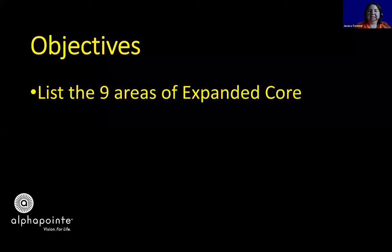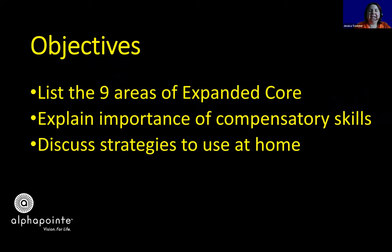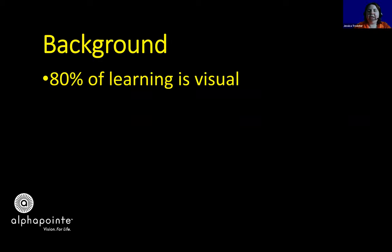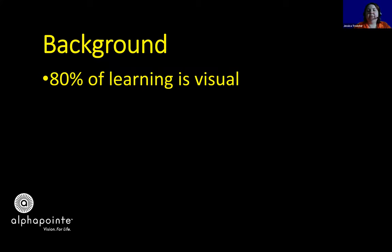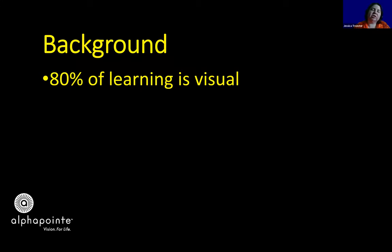Our objectives for today's webinar: we want to list the nine areas of the Expanded Core Curriculum, explain the importance of compensatory skills, and discuss strategies you can use at home. A little background: over 80% of learning is visual — that's how our brains are hardwired from birth. When a child is born with a visual impairment, they have to make up for that main sensory area. Our society is designed so that over 80% of learning is observational or incidental.